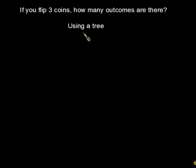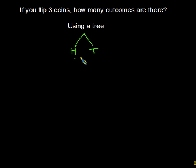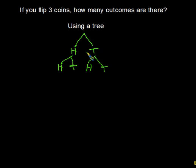In using a tree, the first thing we say is: what are the possible outcomes if we wanted to flip one coin? Well, you could either have heads or tails. And then if we flipped a second coin, we could either get heads or tails for that coin, or heads or tails if we had flipped a tail for the first coin.